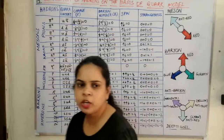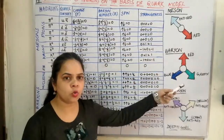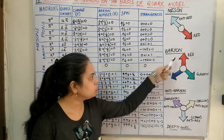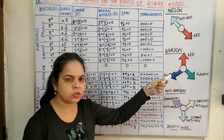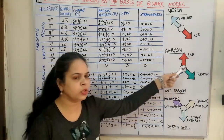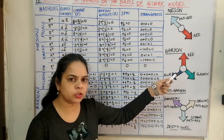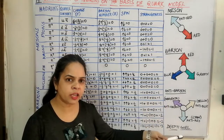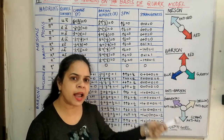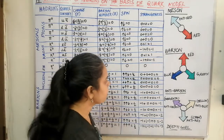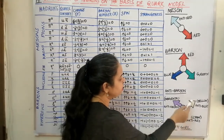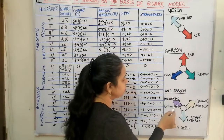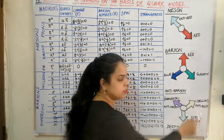In the color scheme, the baryon is a combination of 3 quarks of 3 different colors — red, green, and blue — so that the Pauli exclusion principle is obeyed. In the anti-baryon, there are 3 anti-quarks having 3 anti-colors: red has anti-color anti-red (cyan), green has anti-color magenta, and blue has anti-color anti-blue (yellow).